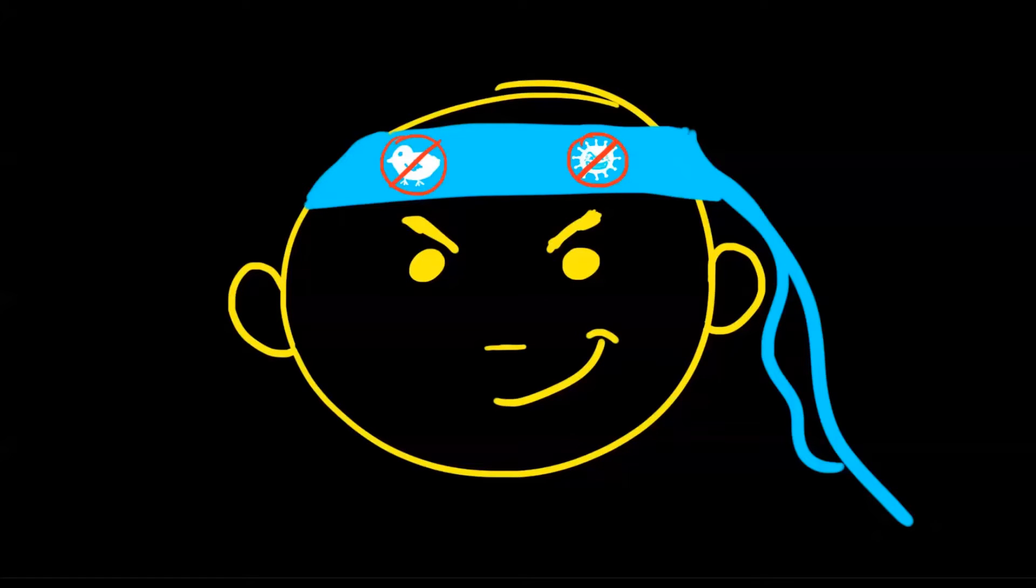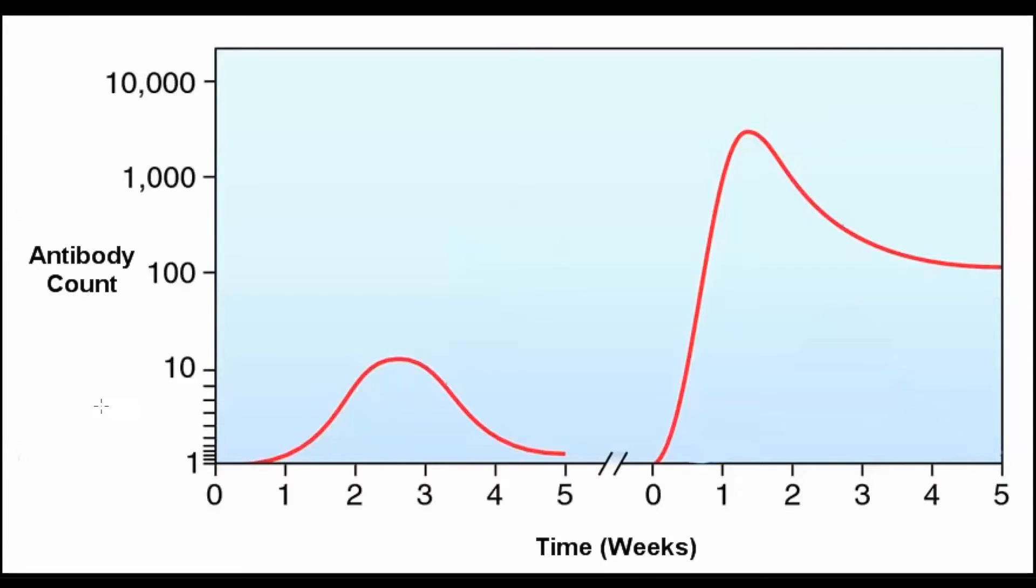Let's take a look at a figure that illustrates all this. So check this out. The x-axis represents time. As we go to the right, time passes. The y-axis is the antibody concentration.